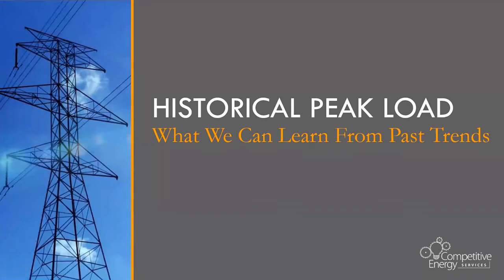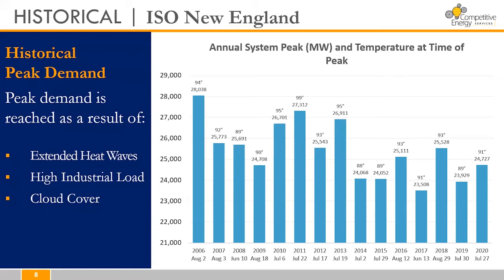Let's take a look at how grid demand has changed over the past 15 years. This ISO New England annual system peak graph shows that over the past 15 years the key indicators suggesting a system peak could occur have remained largely the same — extended heat waves and high industrial load are two key pieces of the equation. Air conditioning demand across commercial, industrial, and residential facilities ramps up each summer in response to hotter temperatures. On the graph, the y-axis shows total megawatt demand on the grid and the x-axis shows the year, month, and date where the peak day occurred each year.